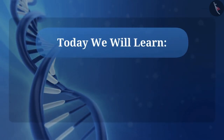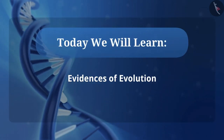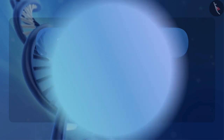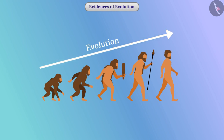Today we will learn about evidences of evolution. There are various species around us and they are evolving at a slow rate. Evolution is the result of the accumulation of variations over many generations. Several proofs can be given about evidence of evolution.